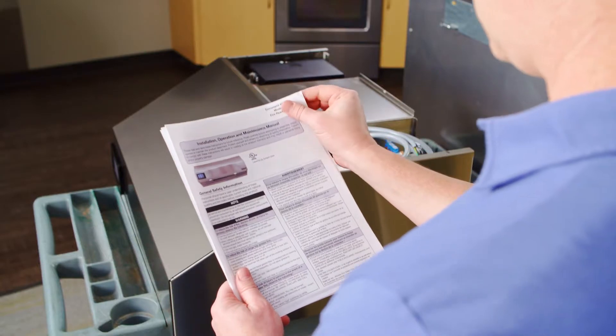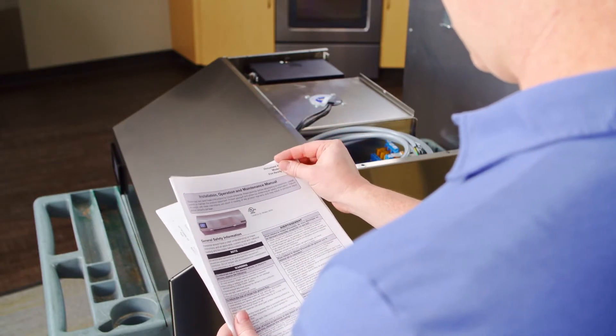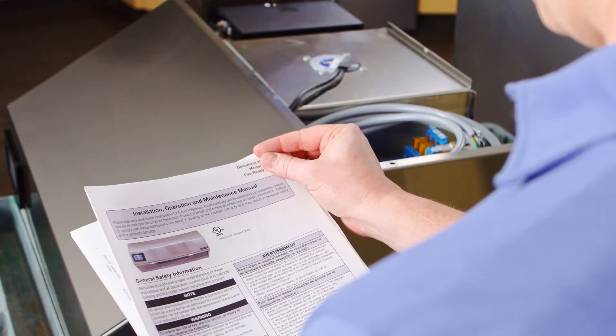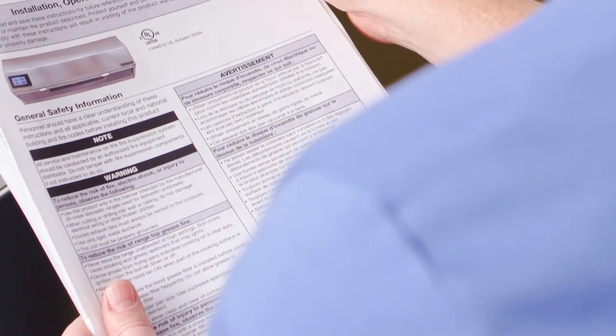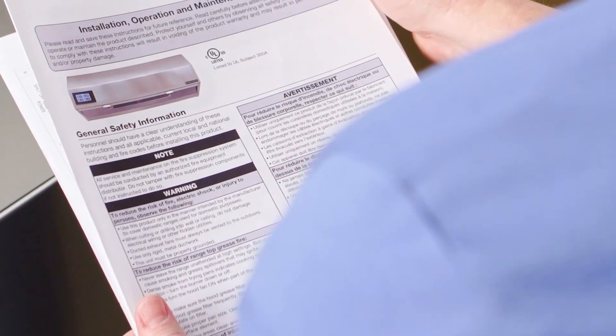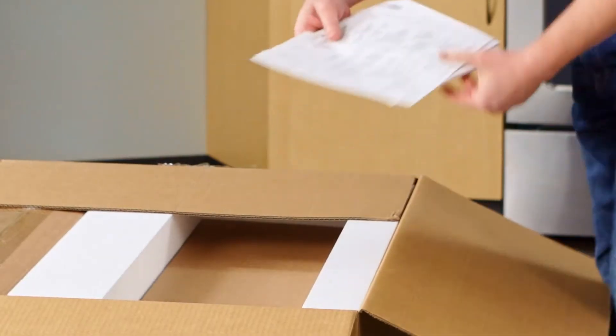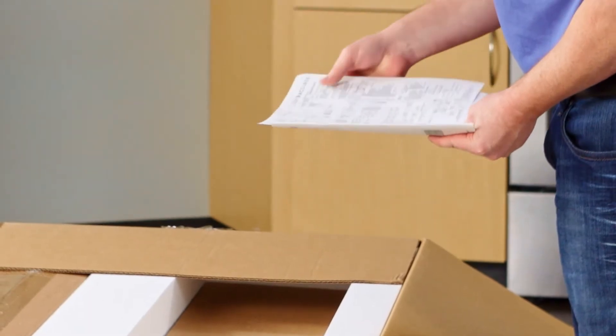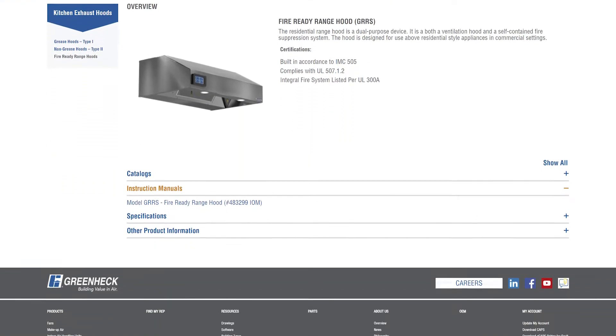It is important not to adjust the fire suppression system after the initial start-up unless authorized to do so. It is highly recommended to have a copy of the Installation and Operations Manual on hand before arriving on site. The IOM contains important information regarding the installation, maintenance, and troubleshooting if needed. It also has copies of wiring diagrams that will help in the process of wiring the hood. A copy of this document ships in the product packaging and is also available at GreenHEC.com.